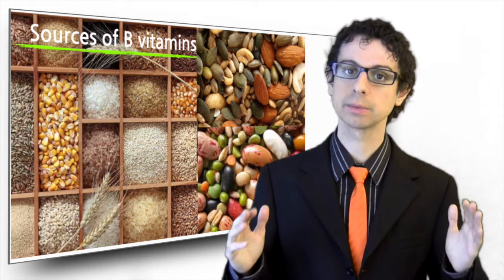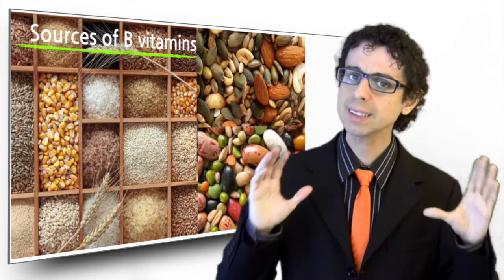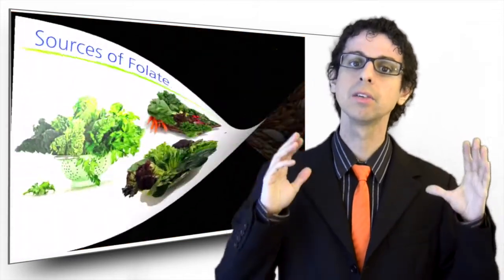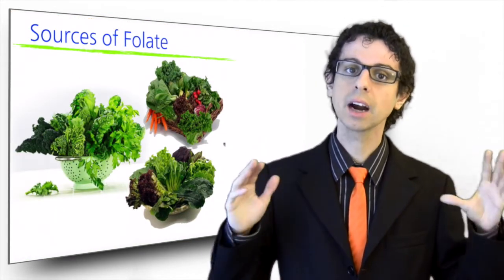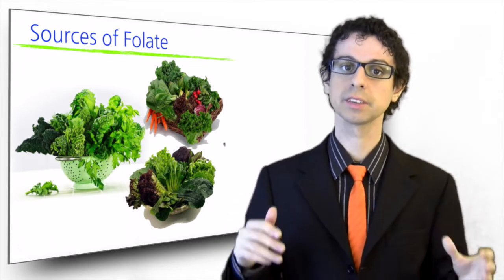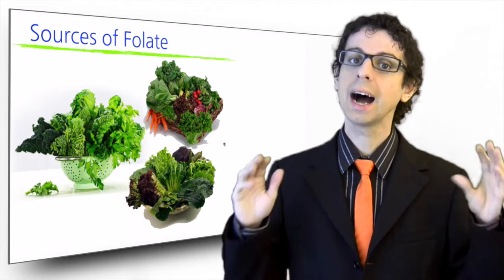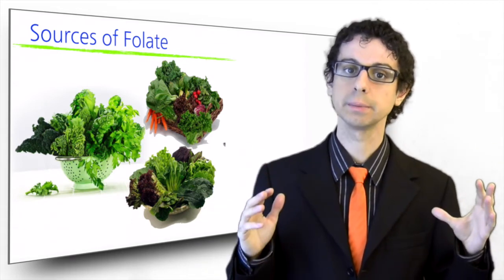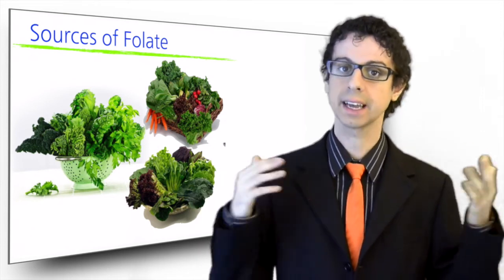Nuts, seeds and legumes are also good food sources of these vitamins. Some B vitamins, and in particular folate, are abundant in vegetables, and particularly dark green and green leafy vegetables such as spinach, Brussels sprouts, broccoli, asparagus. Ideally, these vegetables should be eaten raw, or quickly steamed, and not stored for too long, as folate is sensitive to light and heat.